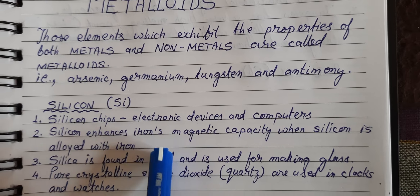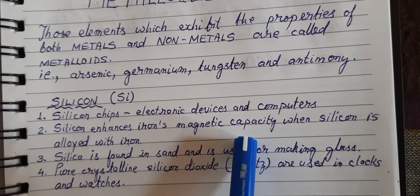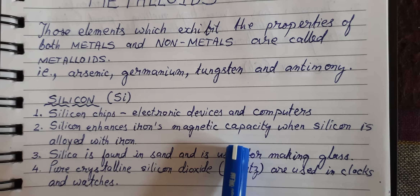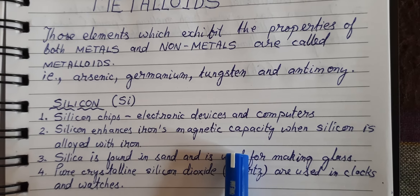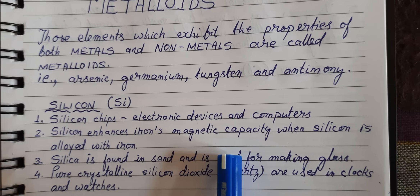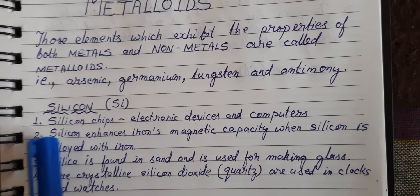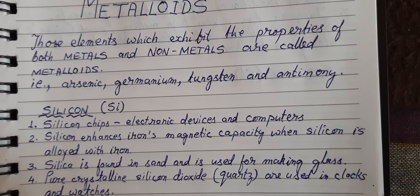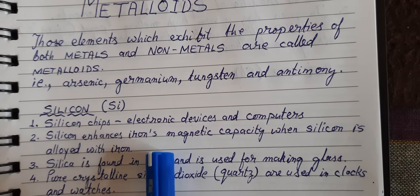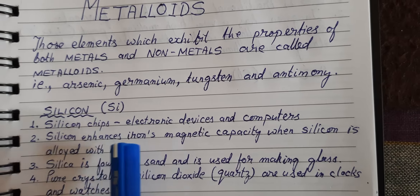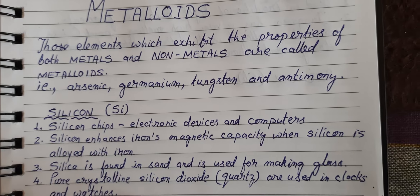Silicon also enhances iron's magnetic capacity. Artificial magnets can be made with iron, and when iron is alloyed with silicon it becomes a better magnet. Silicon enhances iron's magnetic capacity when silicon is alloyed with iron.